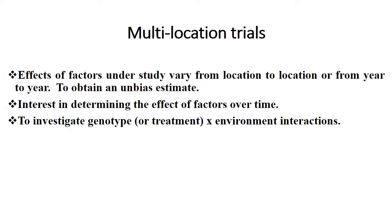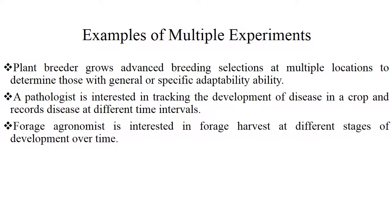Coming to multi-location trials. Effects of factors under study vary from location to location and from year to year to obtain unbiased estimates. Interest is in determining the effect of factors over time to investigate G×E interaction. For example, plant breeders grow advanced breeding selections at multiple locations to determine those with general or specific adaptability. Pathogenists are interested in tracking the development of disease in crops and recording disease at different time intervals and different locations. Forage agronomists are interested in forage harvest at different stages of development over time.